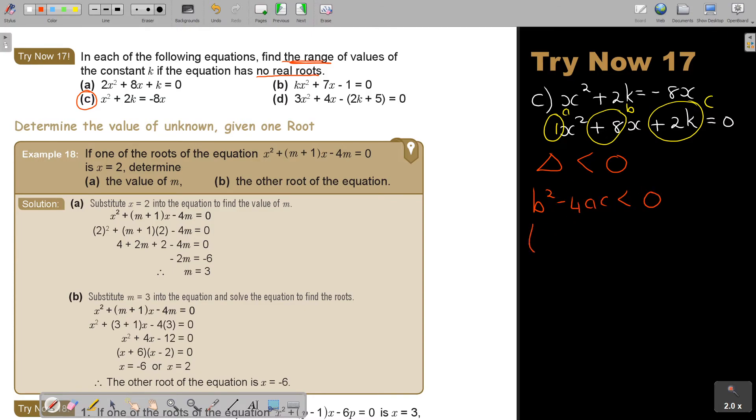So it's B squared minus 4AC smaller than zero. So in the place of B, I'm going to say it's 8 squared minus 4AC, 2K, and that's smaller than zero. Don't make it equal. So this is 64 minus, this is a minus, can you see? 8K is smaller than zero.